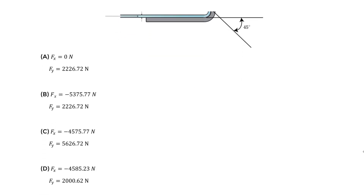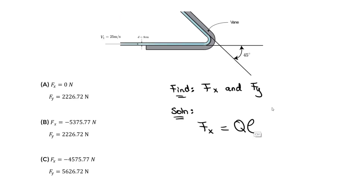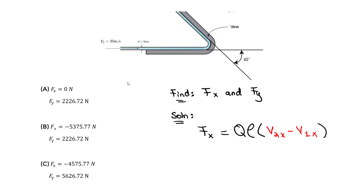We want to find the component forces Fx and Fy in newtons. The equation for Fx is: Fx equals density (ρ) times volumetric flow rate (Q), multiplied by the quantity V2x minus V1x, where V2x and V1x are the x-direction velocity components at the exit and inlet respectively.